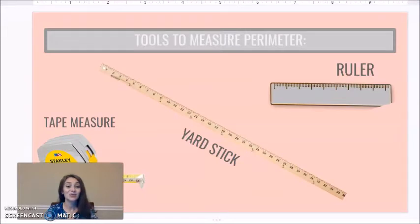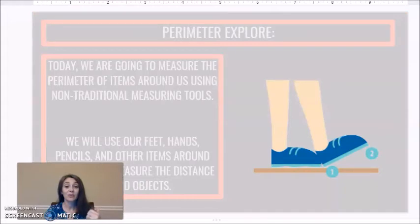Okay, here's the tools you're going to use to measure perimeter. You can use a tape measure, a yardstick, or a ruler. Today we're going to be measuring perimeter using different things, non-traditional items and non-standard items. So these are things that you might have in your house. You're definitely going to have some of these things. And that way you don't even have to use a ruler to measure the perimeter today.